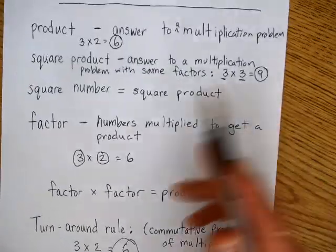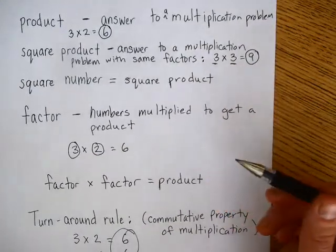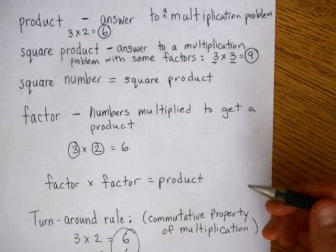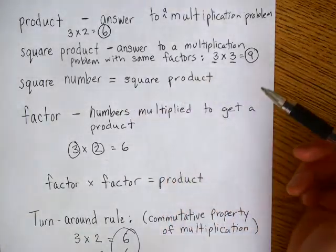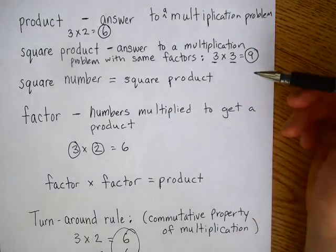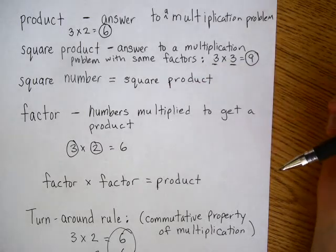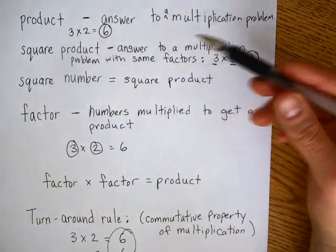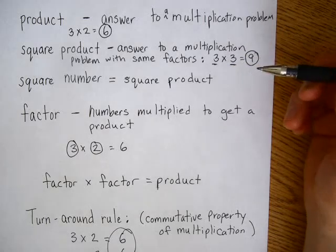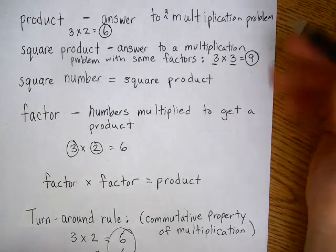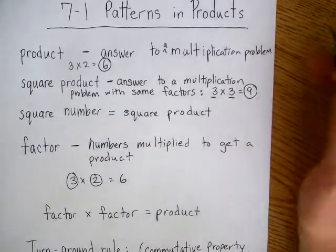The more that you use these words and work with the kids on the concepts of multiplying things together, the more it will help them. As far as squares, square numbers, and square products go, this is just a basic introduction. Anything visual that you see that might fit — please show it to them or have them draw it out and talk to you about it. This is lesson 7.1, Patterns and Products of Grade 3 Everyday Math.